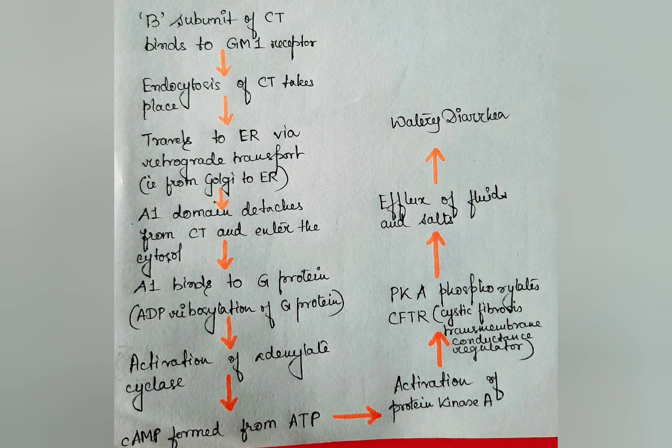After ADP ribosylation of the G protein, adenylyl cyclase gets activated, and a huge amount of cyclic AMP is formed from ATP. This cyclic AMP activates protein kinase A, which in turn phosphorylates the CFTR — the cystic fibrosis transmembrane conductance regulator.